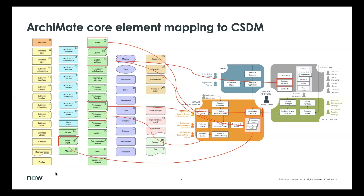Communication network also maps to application services, as when you do service mapping you can identify the communication between application services — so that's largely captured there.